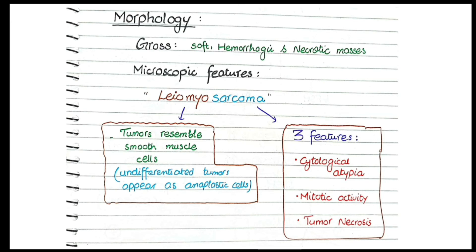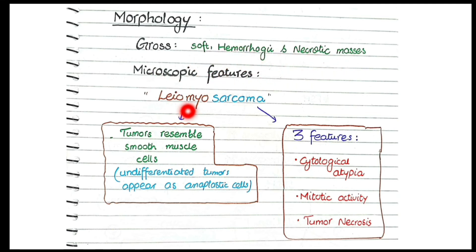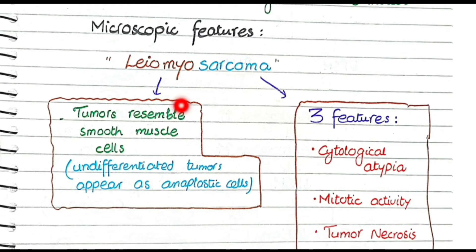Now let's discuss the morphology of leiomyosarcomas. As far as gross features are concerned, they appear as soft, hemorrhagic, and necrotic masses. Remember that leiomyomas were well-circumscribed, but leiomyosarcomas show areas of hemorrhage and necrosis. For microscopic features, the tumor cells resemble smooth muscle cells. Sometimes undifferentiated tumors can appear as anaplastic cells that do not resemble smooth muscle cells at all, so the tumor cells can be smooth muscle-like or undifferentiated.